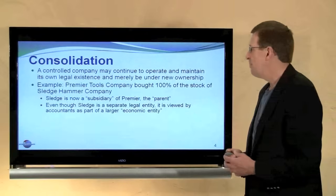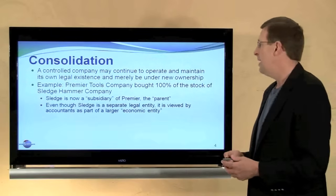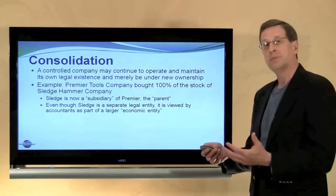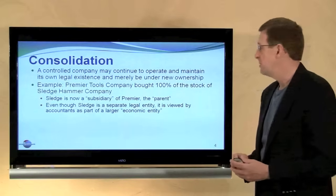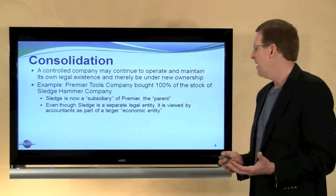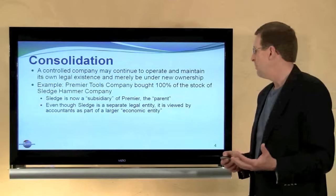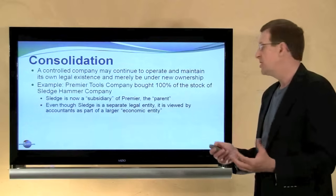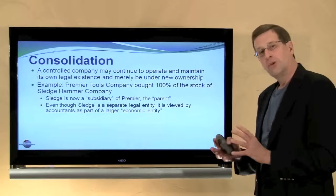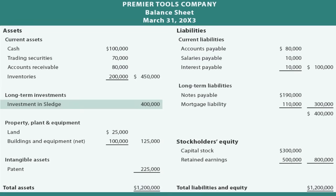Let's look at an example. Premier Tools will be the parent — P as in parent or P in Premier. Premier Tools bought 100% of the stock of Sledgehammer, the subsidiary — S for Sledge or S for subsidiary. Sledge is now a subsidiary of Premier the parent, and even though Sledge will continue to operate as a separate legal entity and prepare its own separate financial statements, from the accountant's point of view there is one economic entity and we will present a consolidated financial statement.